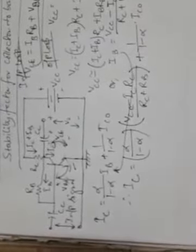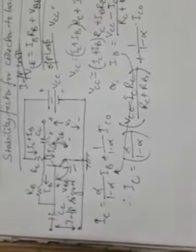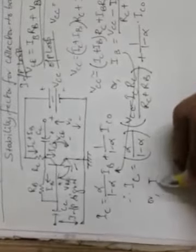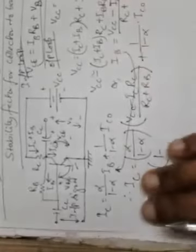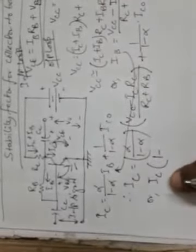Now combining equation three with the fundamental transistor current equation IC equal to (alpha/(1 minus alpha)) times IB plus (1/(1 minus alpha)) times ICO, and substituting IB from equation three into this, we can write IC equal to (alpha/(1 minus alpha)) times (VCC minus IC times RC) divided by (RC plus RB), plus (1/(1 minus alpha)) times ICO.